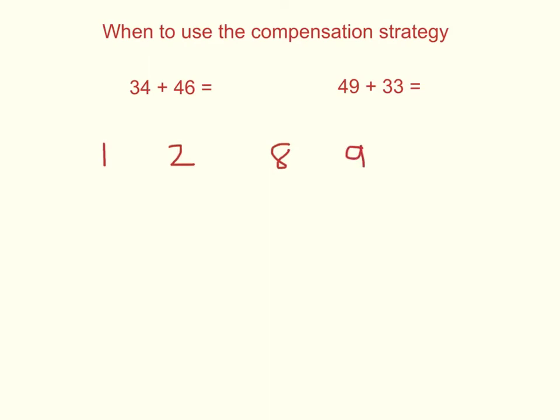Numbers that end in 1, 2, 8, and 9 are numbers that are closest to the most friendly numbers, which are numbers that end in zeros. Although you can use the compensation strategy for any and all questions, it is a much easier strategy to use when you have questions that have numbers in it that end in 1, 2, 8, and 9.